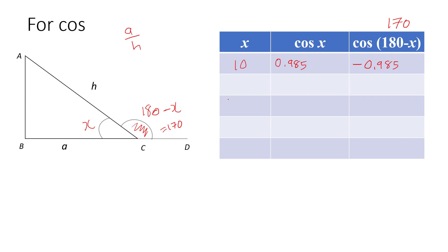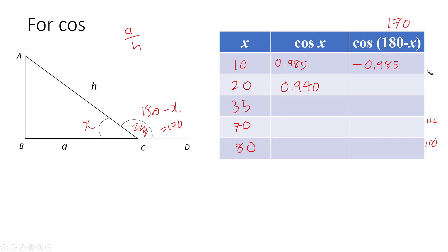Let's try x equals 20, 35, 70, and 80. Cosine 20 gives 0.940, and the supplementary angle 160 gives negative 0.940. Cosine 35 gives 0.819, the supplementary angle 145 below it. Cosine 70 gives 0.342 and cosine 80 gives 0.174. Their supplementary angles are 110 and 100 respectively.